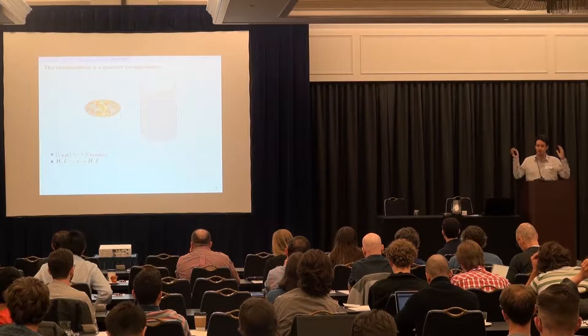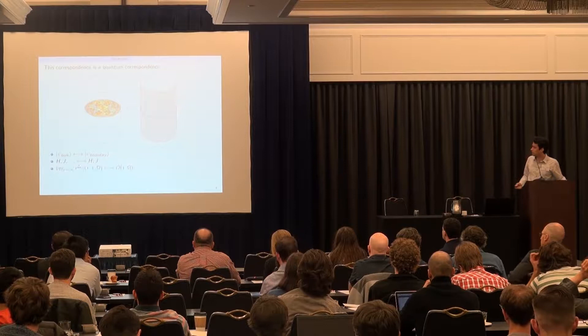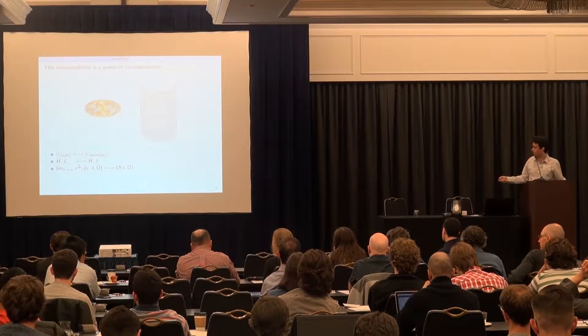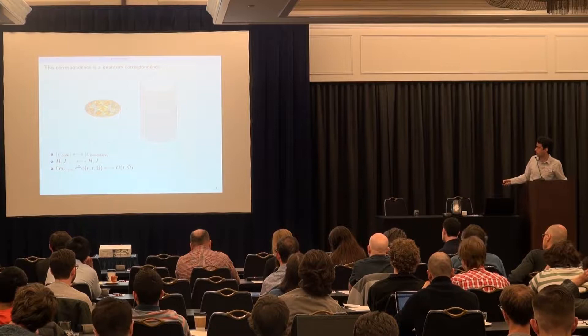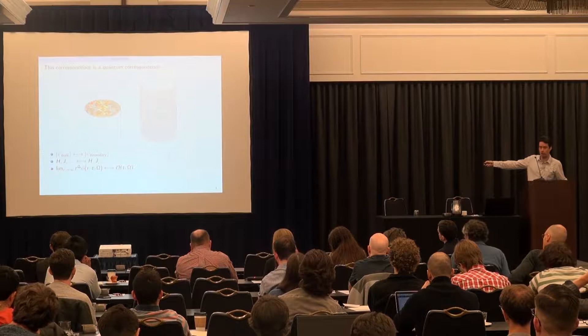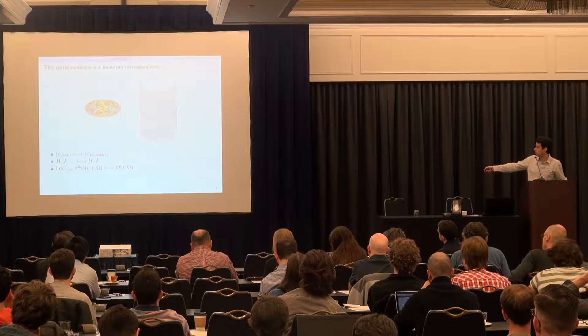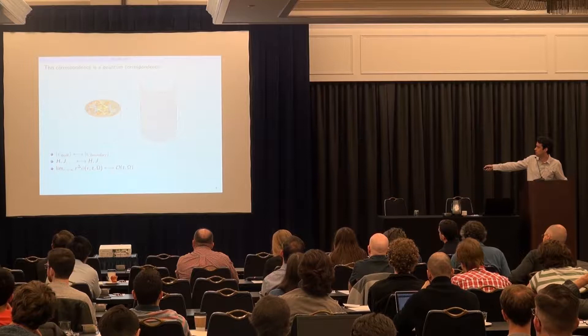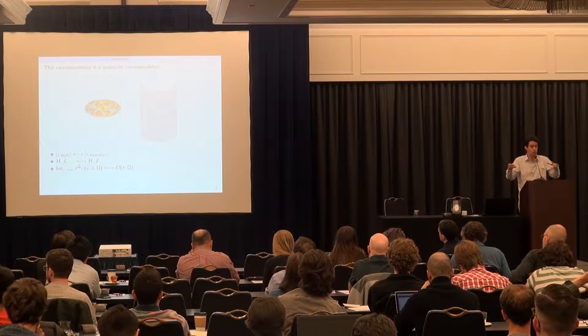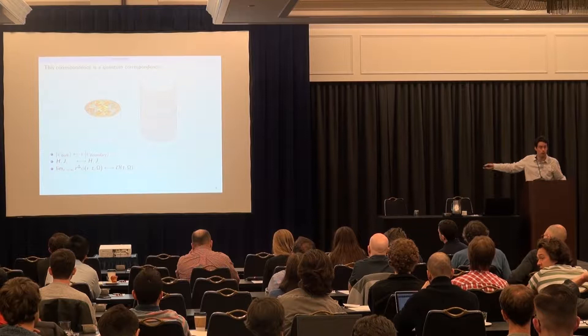A more useful part of the dictionary is the extrapolate dictionary, which says that if I have a local operator sitting somewhere in the bulk and I take the limit of pulling it to the boundary, through the isomorphism it just becomes a local operator in the boundary theory — specifically at the point I moved the bulk operator to. That's how you see the relationship between locality on the two sides.